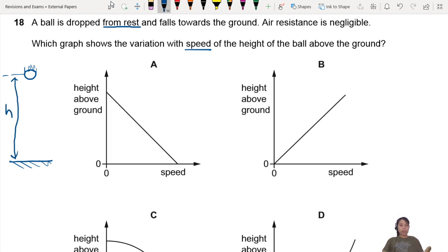So when it's a graph question, step 1: Think about two points - the beginning and the end, the initial and the final. At the beginning, from rest means no speed. And how high is this thing? Highest it can be.